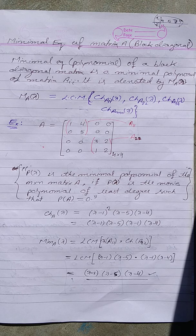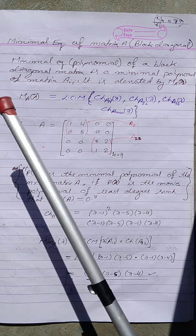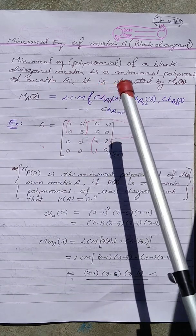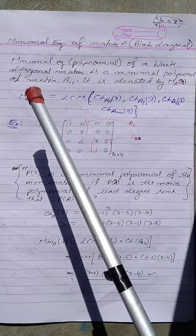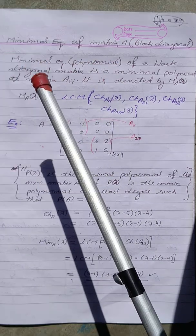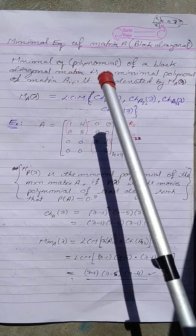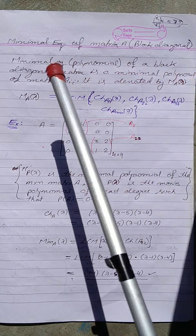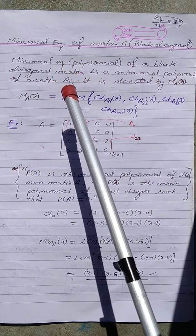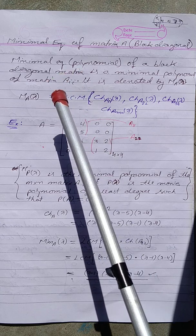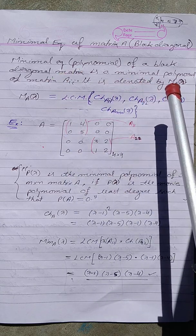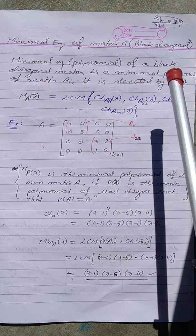Good morning students. Today we will learn about the minimal equation of a block diagonal matrix and the process for finding it. The minimal polynomial of a matrix A of order n×n is denoted by m(A, λ).